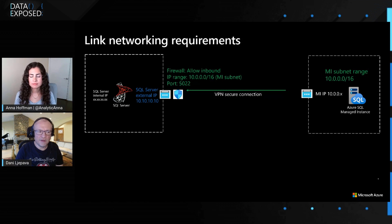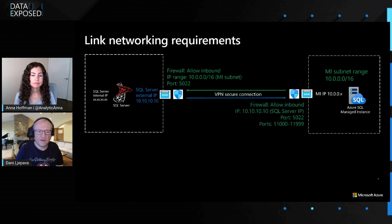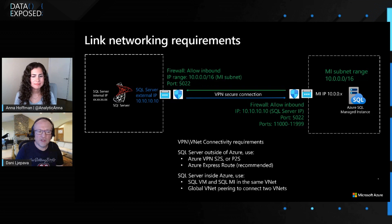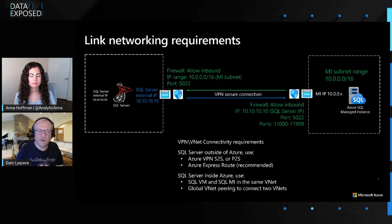On the other end, the same port 5022 needs to be opened inbound for Managed Instance. We also need the port range 11,000 to almost 12,000 for data communication. In addition, in order to connect SQL Server and Managed Instance you need to have a VPN to Azure. There are different options: Azure site-to-site, point-to-site, or Azure ExpressRoute, which is the most performant VPN to the cloud. This is to connect SQL Server on-premises or in a data center with Azure.